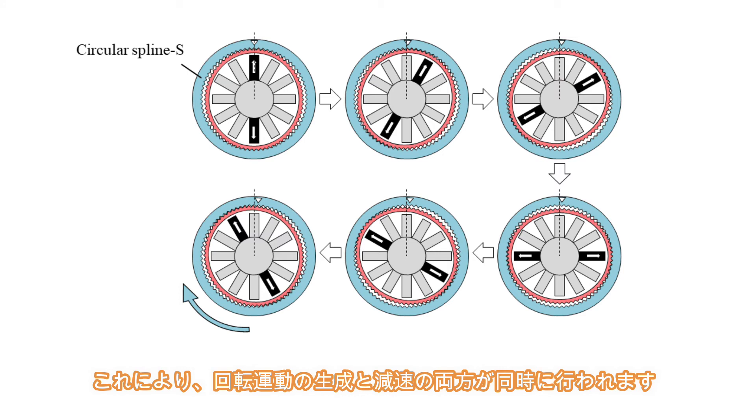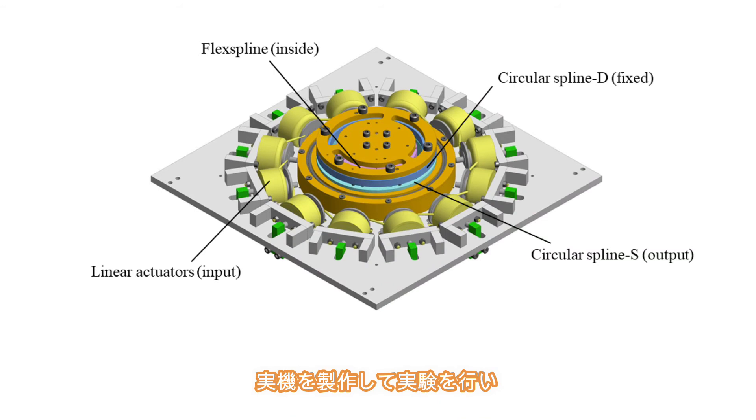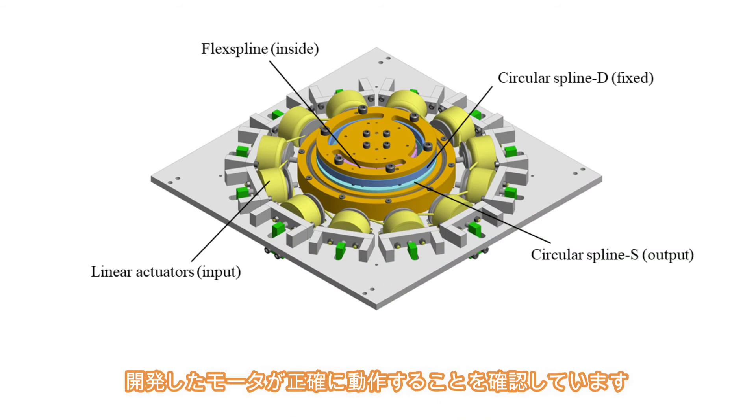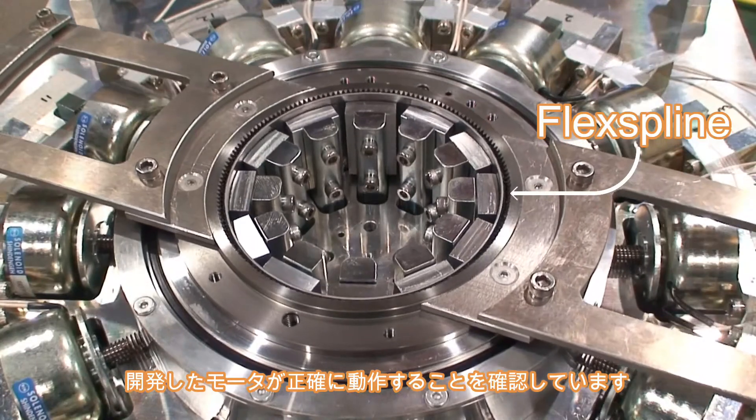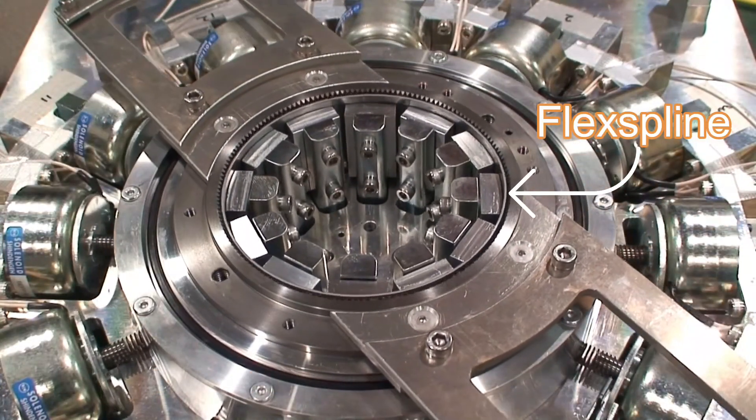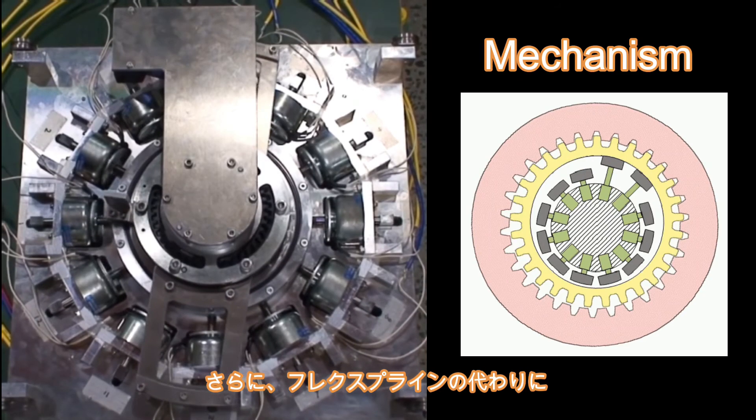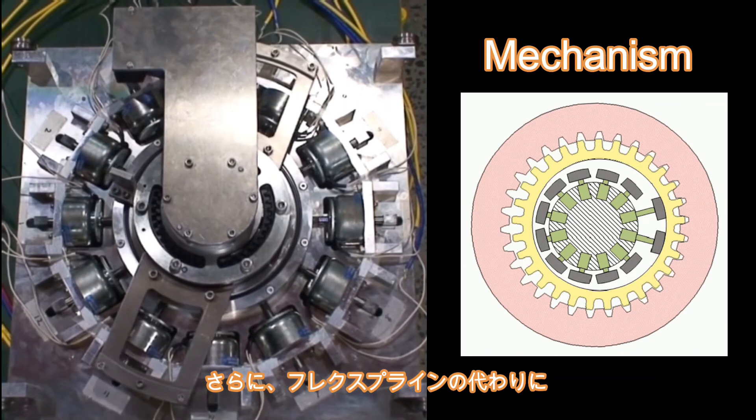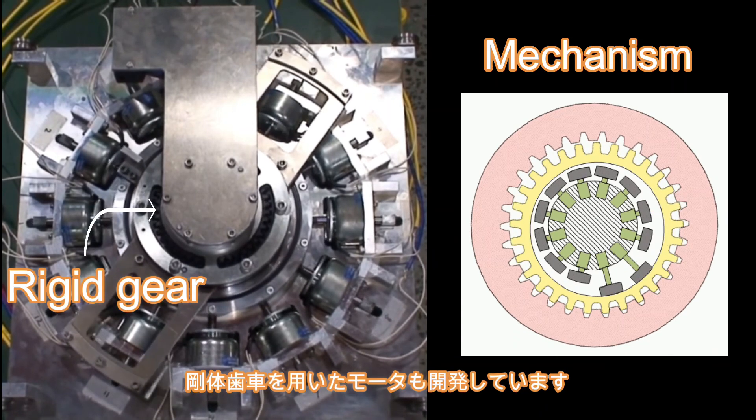In this way, both the rotational motion generation and reduction are performed simultaneously. We built a prototype motor and conducted experiments to verify that the developed motor works correctly. We also developed another reducer-integrated motor using a rigid gear instead of a flex spline.